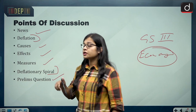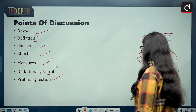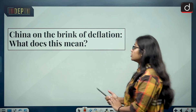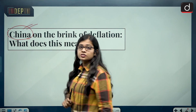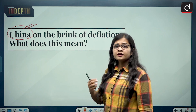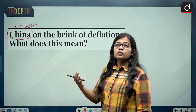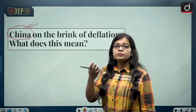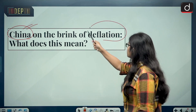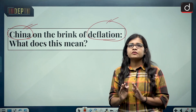From an exam perspective, this topic is relevant for General Studies Paper 3 — that is Economy. You should be able to answer both prelims and mains questions on causes, effects, and measures, as these can be asked in one form or another. The news says China is on the brink of deflation — China, known as a manufacturing hub and the second biggest economy in the world after the US.